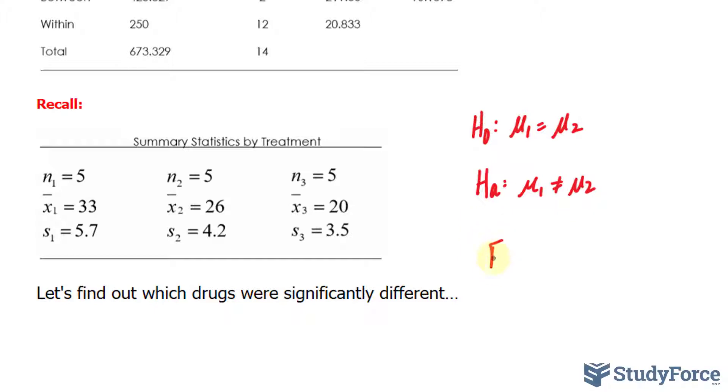So we need to find out F observed so that eventually we can compare it to F critical. To find out F observed, we subtract the mean of group 1 minus the mean of group 2, square that value and divide it by